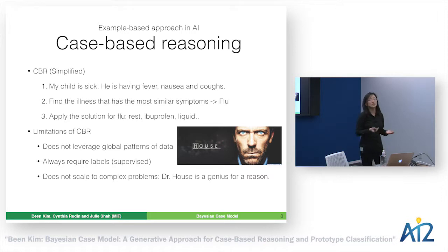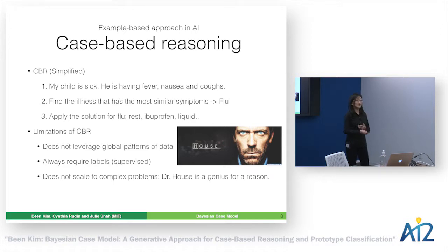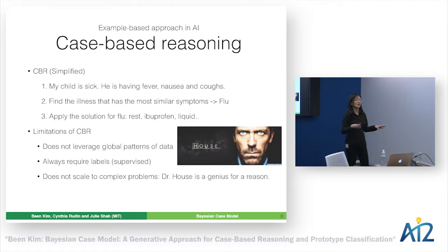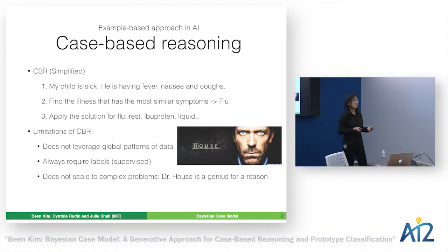But CBR comes with limitations. It does not leverage global patterns in data. For example, if there was food poisoning in your child's school cafeteria last week and a lot of kids are sick, CBR doesn't know how to incorporate that current trend into decision-making. It also always requires labels — you need to know which previous solutions were successful.